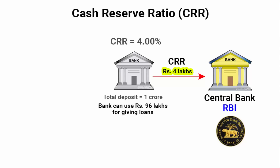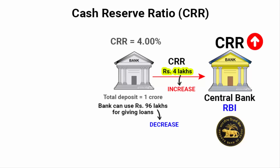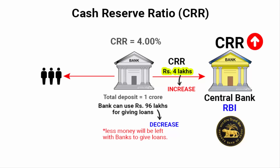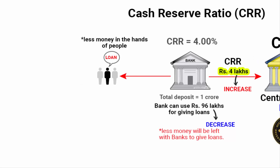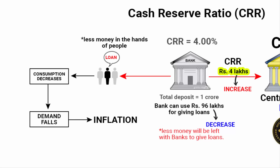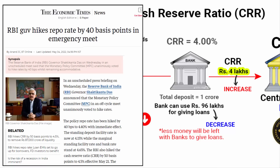CRR is also used to keep inflation under control. RBI will raise the CRR, which means banks have to keep more money with the RBI. That means less money is left for banks to give out as loans. If banks have less money, not everyone is going to get a loan, meaning less money in the hands of people. And again, if there is less money in the hands of people, consumption will decrease, demand will lower, and finally inflation decreases. RBI has raised the cash reserve ratio by 50 basis points.